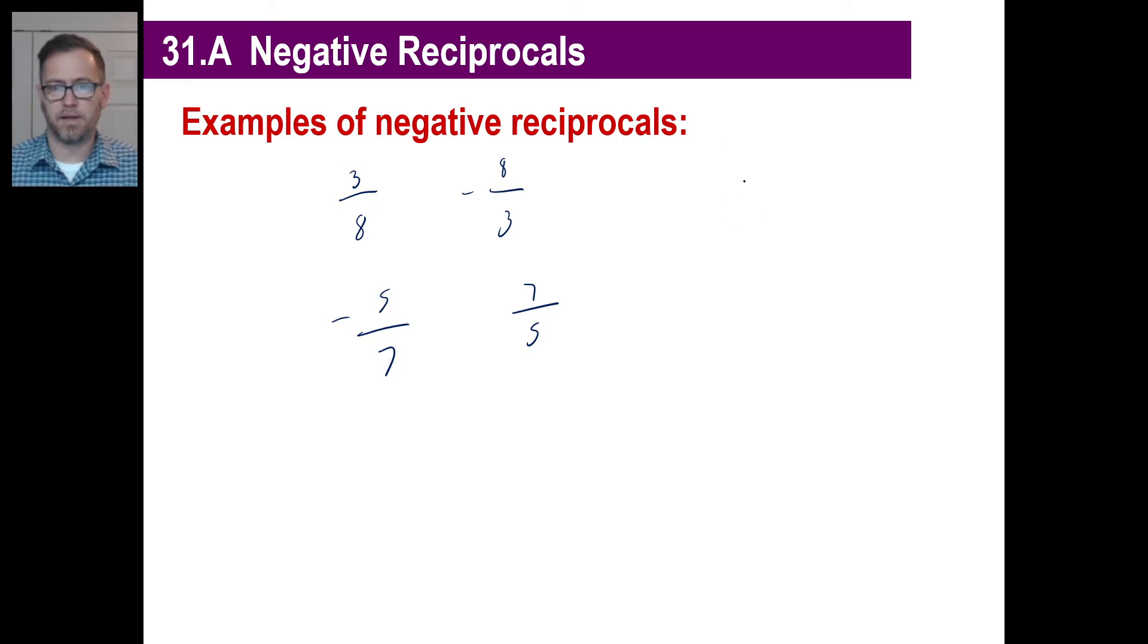Now if you have something like this, let's say somebody asks you, what's the negative reciprocal of, let's just say 3? Well, as a fraction, that's 3 over 1, right? So the negative reciprocal would be negative 1 over 3, right?